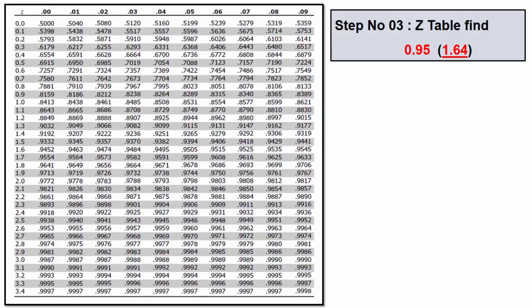The next step is to find the value 0.95 in the Z table. If you look at the table, this 0.95 value is close to 0.9495. Now this value is important for finding out the critical value. Here the two key values are 1.64 and 0.04. Therefore our critical value is 1.64.